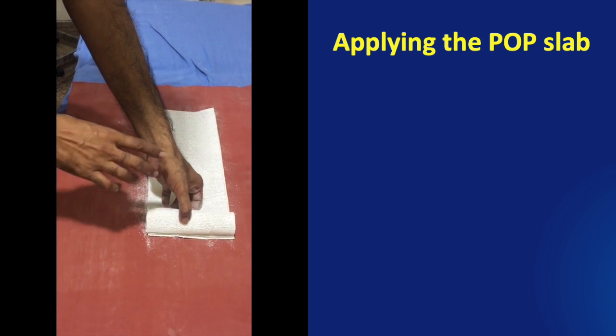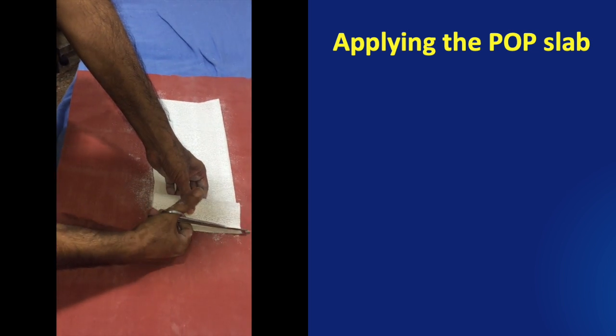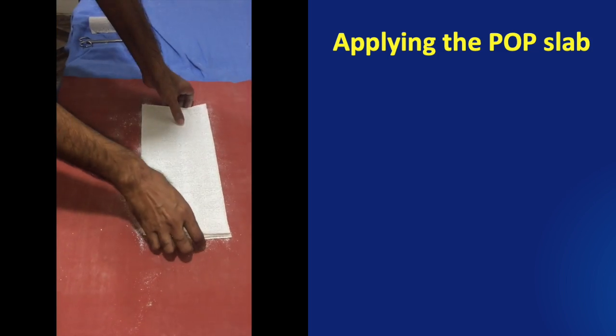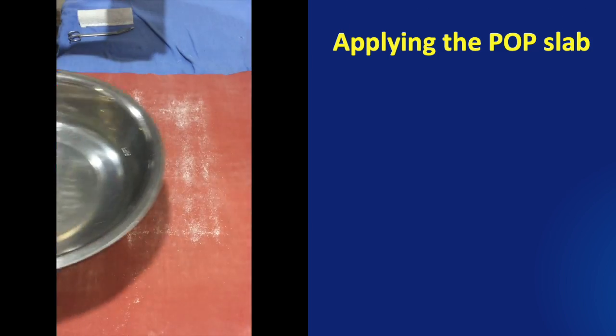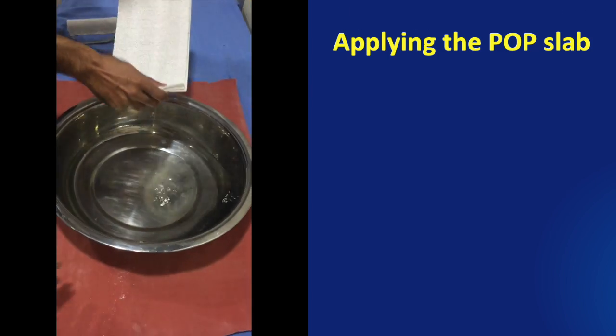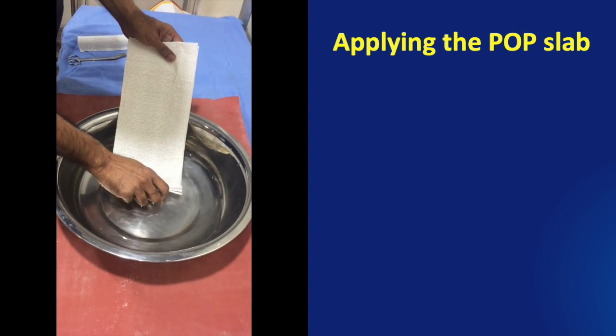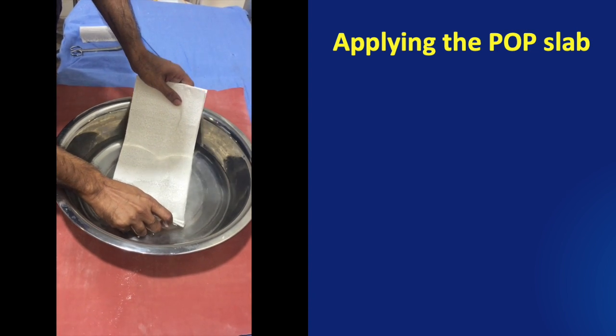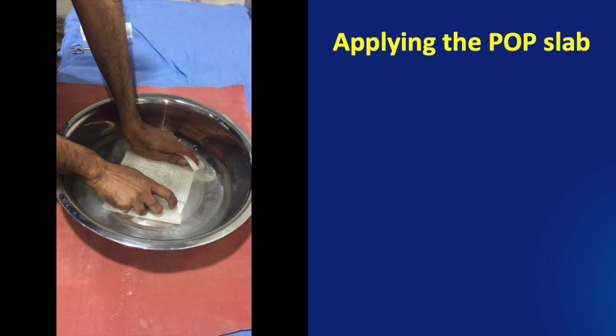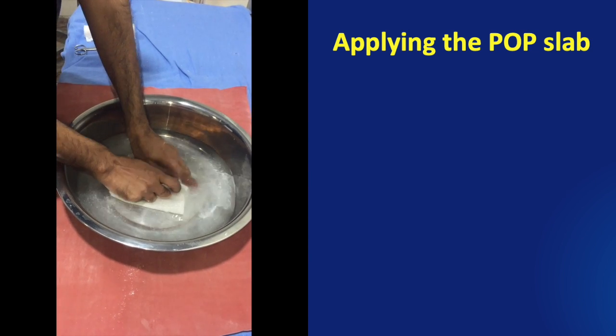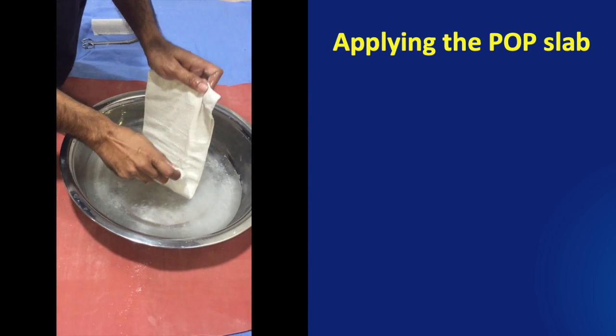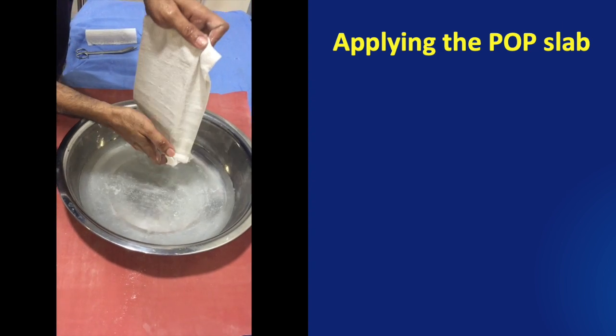Now after making the required length of POP we cut off the POP sheet. Now this prepared POP sheet is in layers. This has to be taken as a whole and immersed gently in the basin of water. We must allow all the air bubbles to escape. This will ensure that the water has reached every single part of the POP slab that we are preparing.